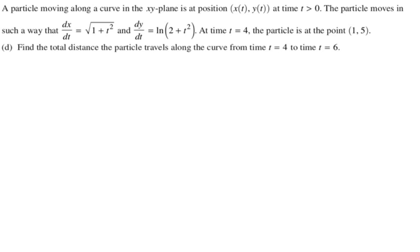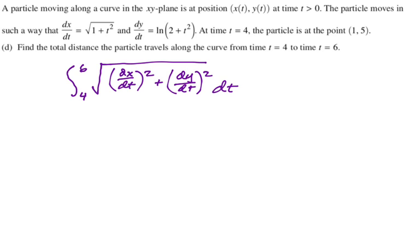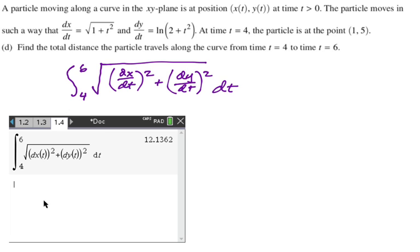Speed is the magnitude of velocity. So we're going to be doing the integral from 4 to 6, because that's our time frame, square root of—because we're finding the magnitude of velocity here—it's going to be dx dt squared plus dy dt squared. And then I'm going to close up this square root sign, and I'm going to put a dt. Then I grab my calculator. I do the integral from 4 to 6 of that, and I get approximately 12.136. And that's the entire problem. It's very straightforward. I hope this was helpful, and good luck.